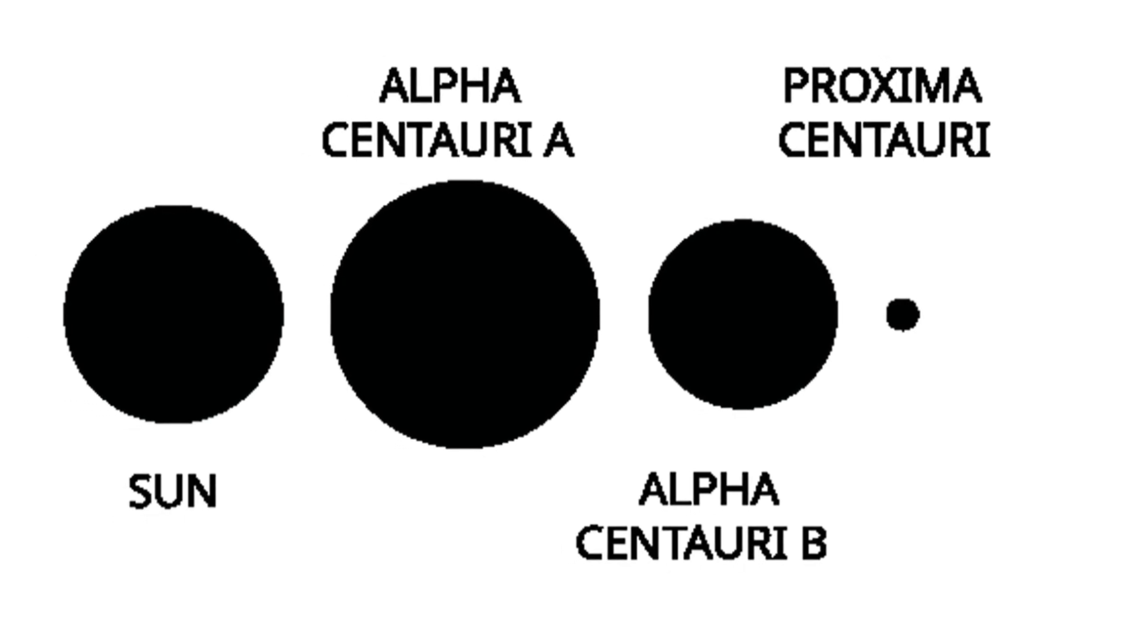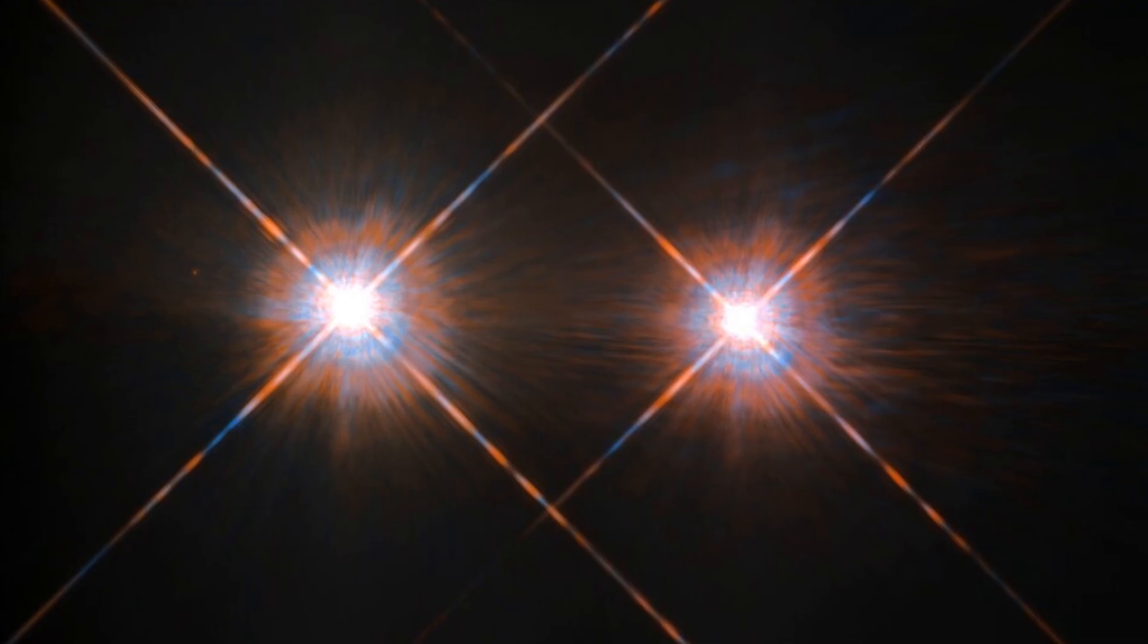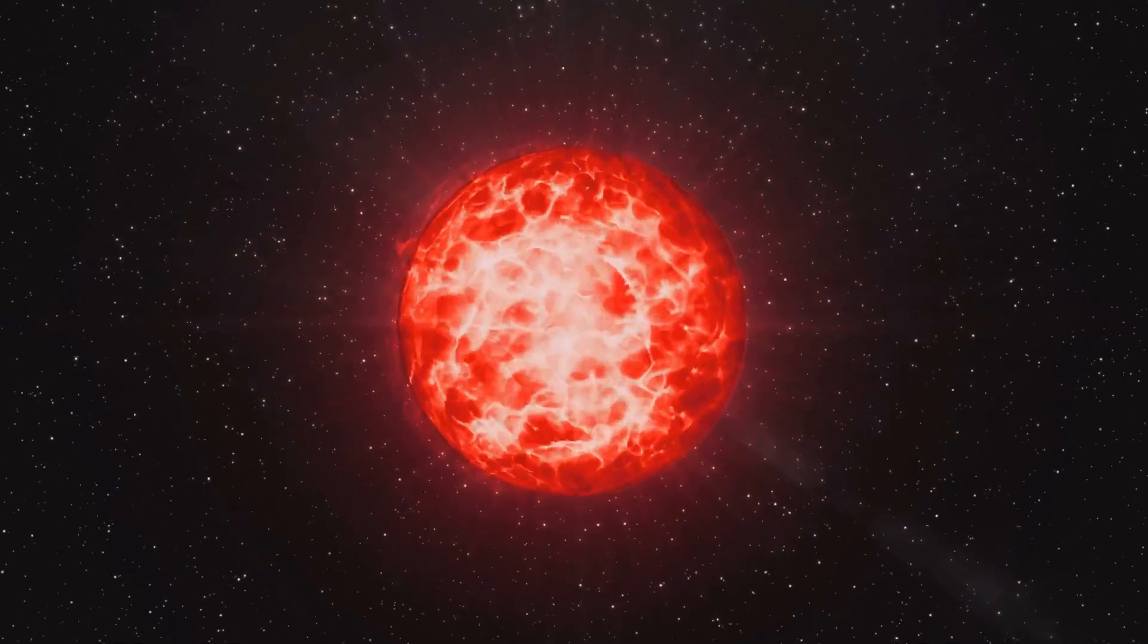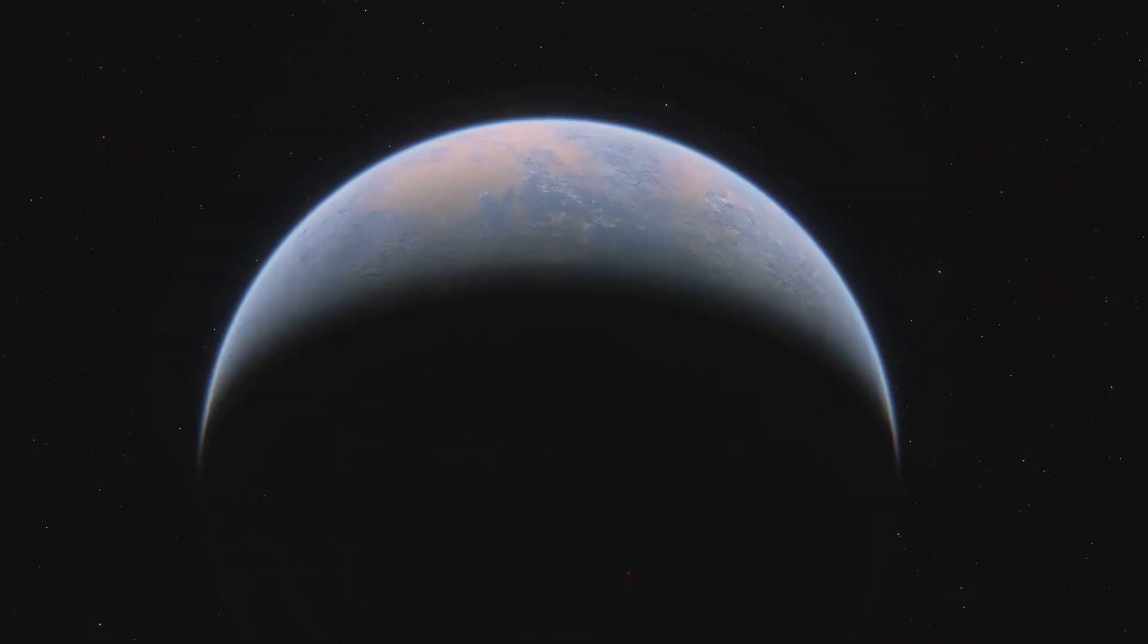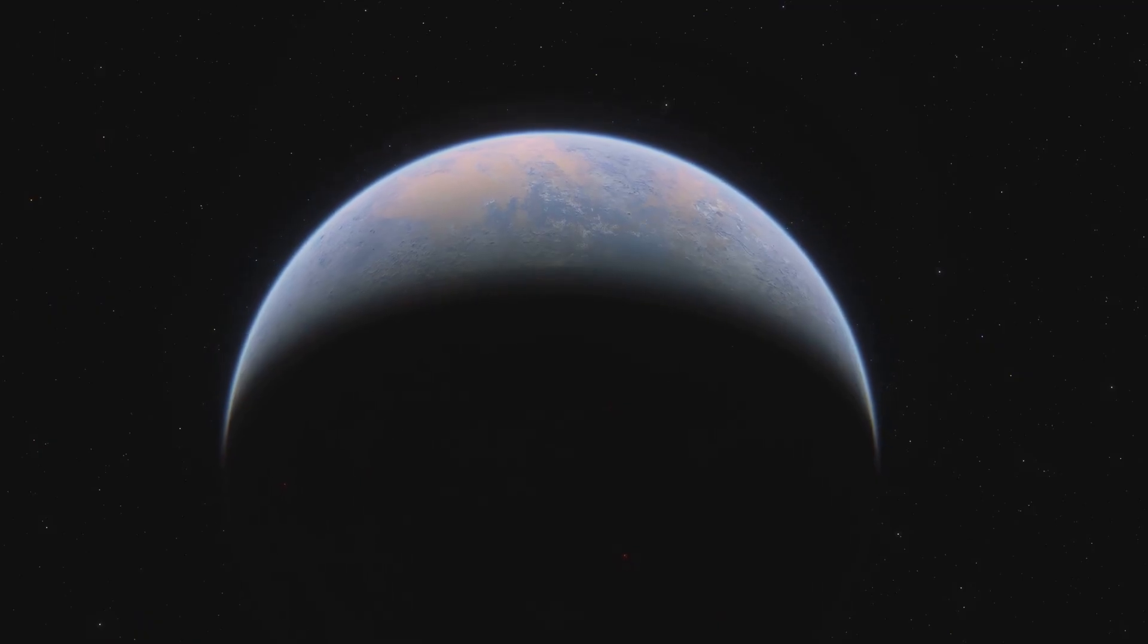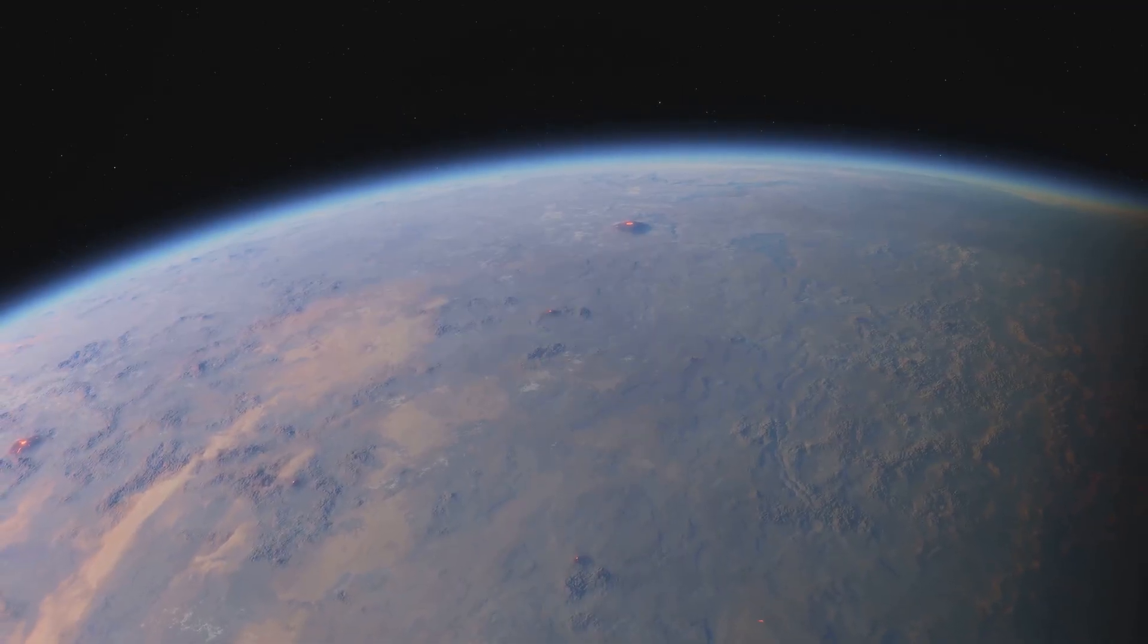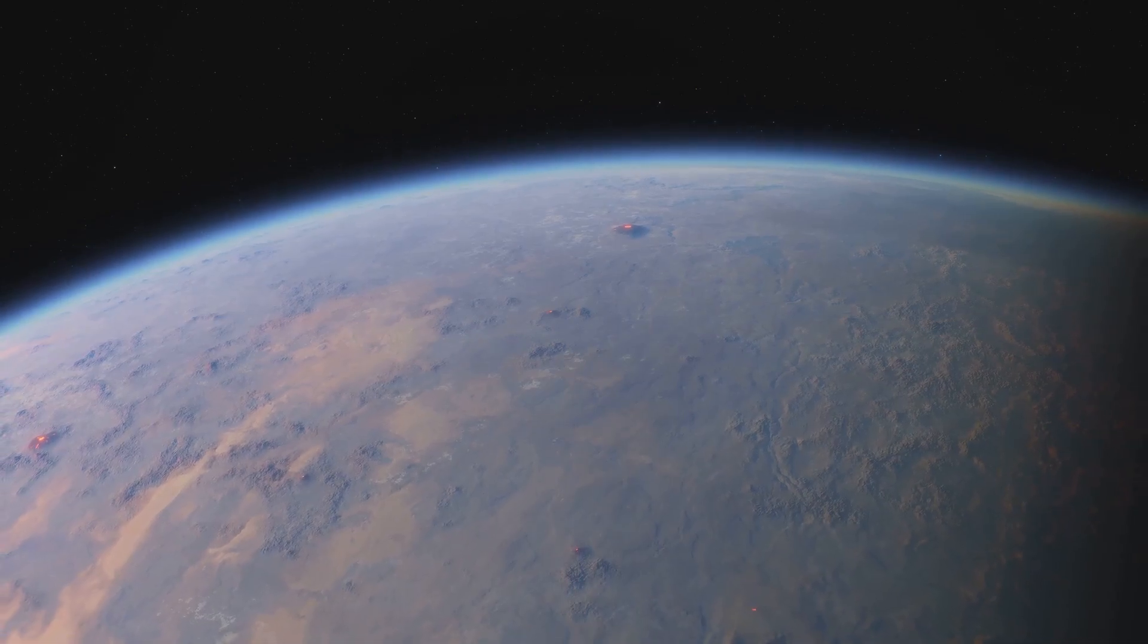Because Alpha Centauri isn't just one star, it's a trio. Two sun-like stars Alpha Centauri A and B orbit each other, and a third dimmer red dwarf Proxima Centauri lurks nearby, and Proxima might have something incredible, an Earth-sized planet in its habitable zone, a rocky world we call Proxima B. We don't know if it's truly habitable, but it gives us something vital, a target, a reason to go.